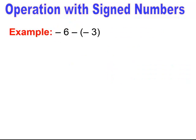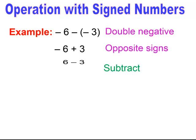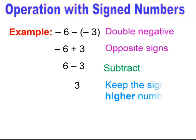Notice in this case I have a double negative, so you might think we have the same sign. But you always have to get rid of the double signs first before you do the arithmetic. That double negative changes to a plus, and now you see different signs. When you have different signs, you subtract, always subtracting the smaller from the larger, then keep the sign of the higher number. In this case the higher number is negative, so my solution is negative three.